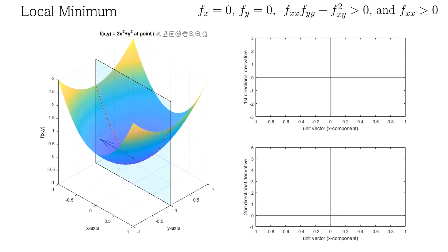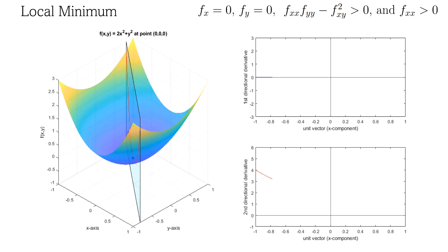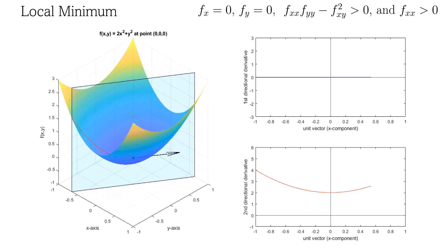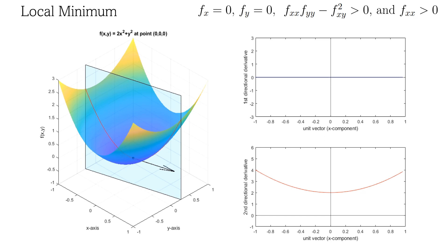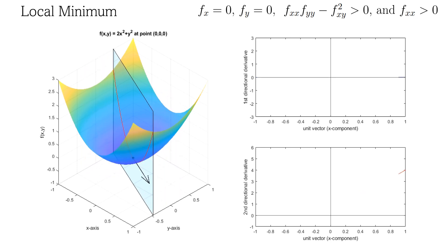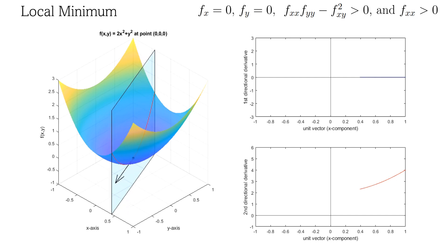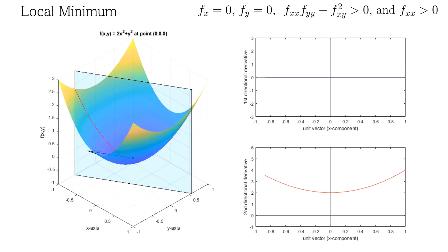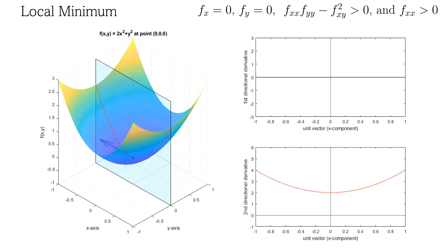For the next example, the second derivative test for this critical point will result in a local minimum, because f sub xx times f sub yy minus f sub xy squared is greater than 0, and f sub xx is greater than 0. Notice that the directional derivative plot in blue is always 0, indicating a critical point. Also notice that the second directional derivative, or the directional concavity, is always positive. So this critical point is a local minimum. Recall that the directional concavity plotted in red in the lower right never crosses the x-axis, because the discriminant is negative, and thus no real roots exist.